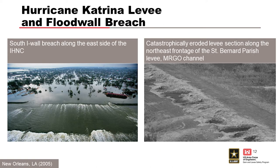Here's another one — Hurricane Katrina levee and flood wall breaches. On the left side, we can see the south I-wall breach along the east side of IHNC, which was likely due to rotational failure of the I-wall after overtopping flood waters scoured the soil supporting the backside of flood protection. You can see a portion that appears to have rotated out. The flood control structure in this area has been replaced by a T-wall. The residential area behind the failed wall is the Lower 9th Ward, and you can see Bayou Bienvenue off to the left.